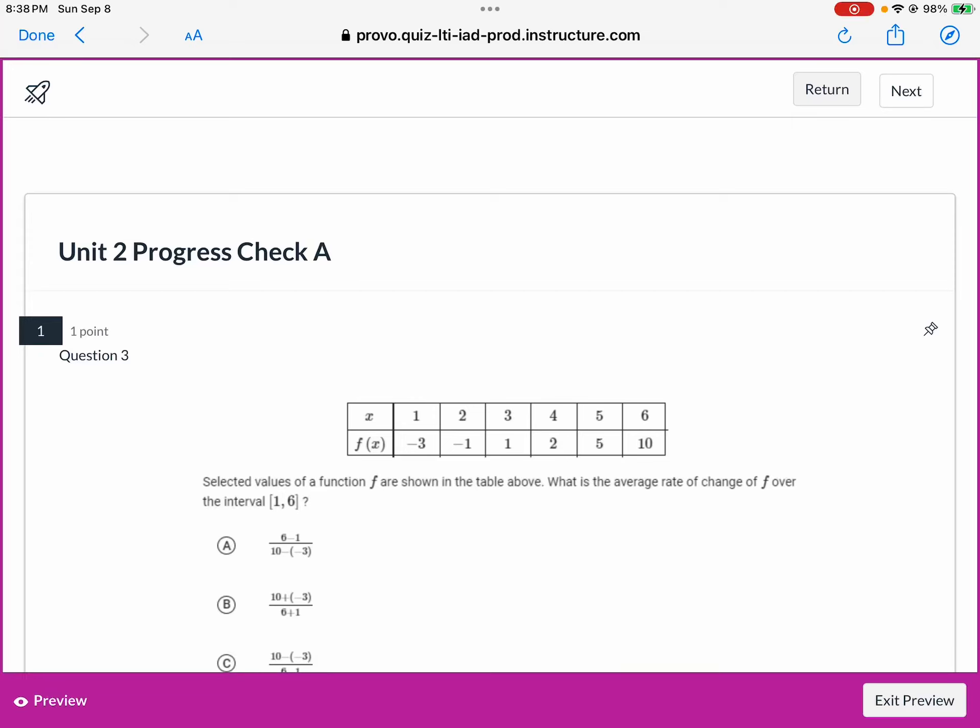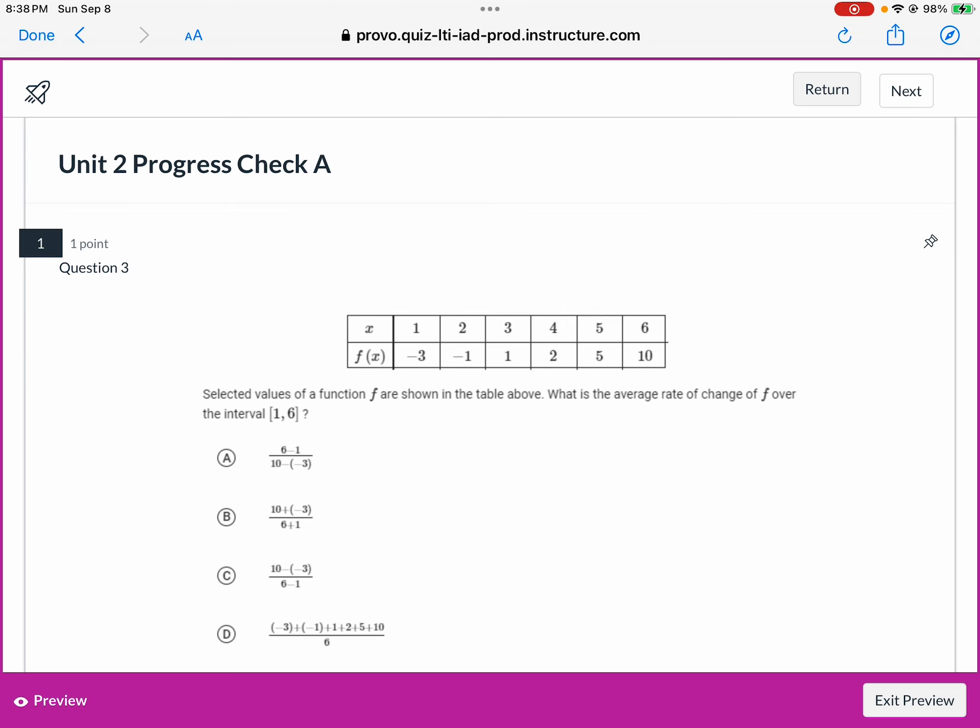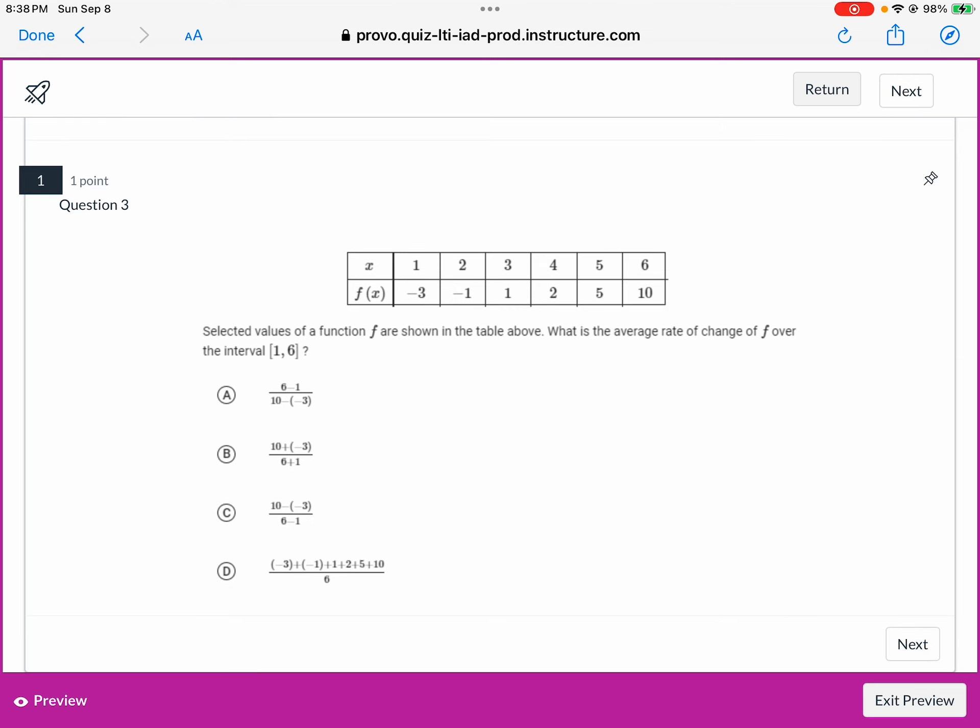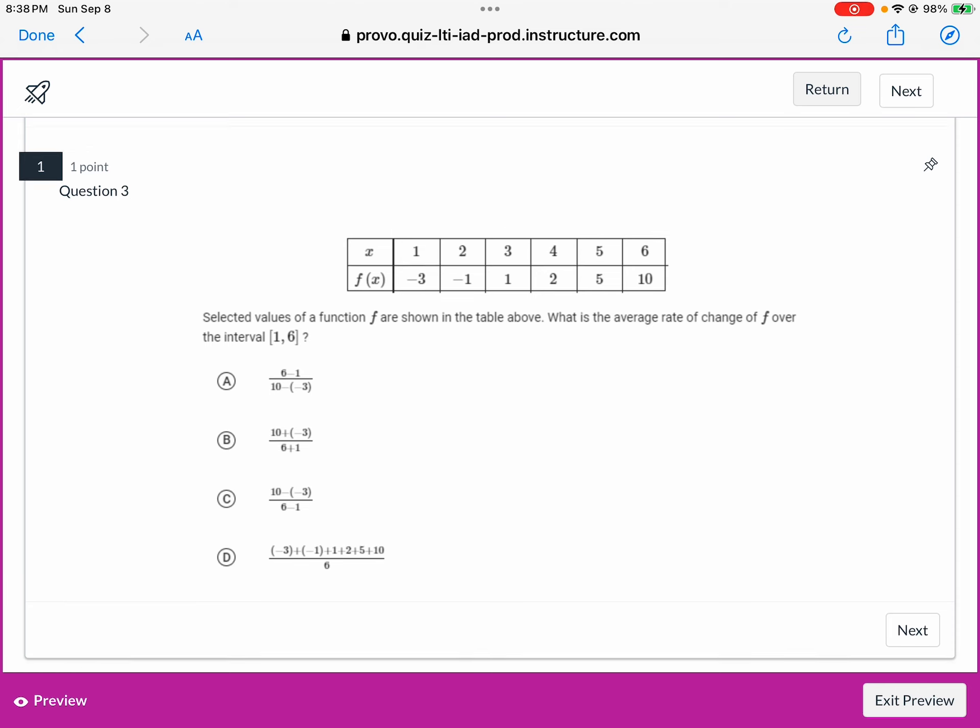Hey guys, this will be the first progress check of unit 2. Starting off, selected values of f are shown in the table above. What is the average rate of change of f over the interval from 1 to 6?